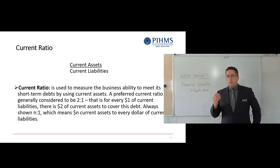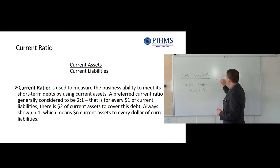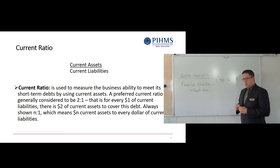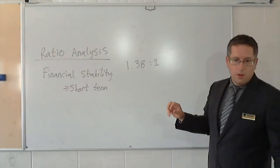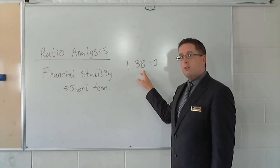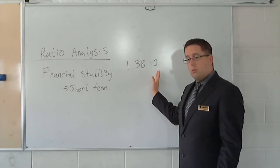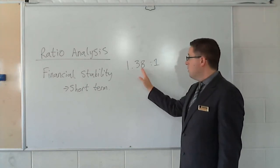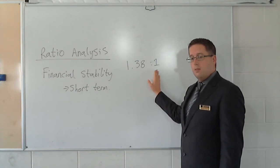So if it is maybe a formula, it comes out to be like 1.38 to 1. What this means is that for every $1 of current liabilities that we have, we have $1.38 of current assets, which is good. It means that we have more current assets than current liabilities.